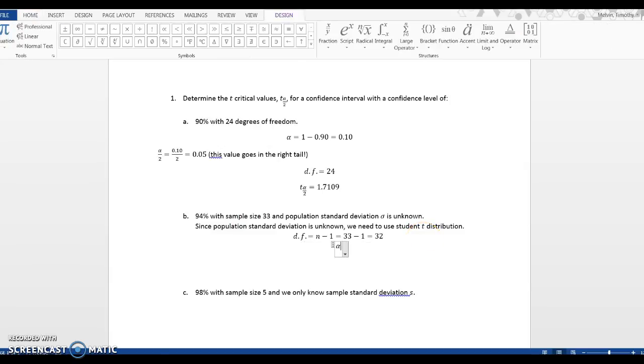Now I want to compute alpha, which is 1 minus 0.94, which is 0.06. Then alpha over 2 is half of this value, so 0.03, and this is the value that goes in the right tail.